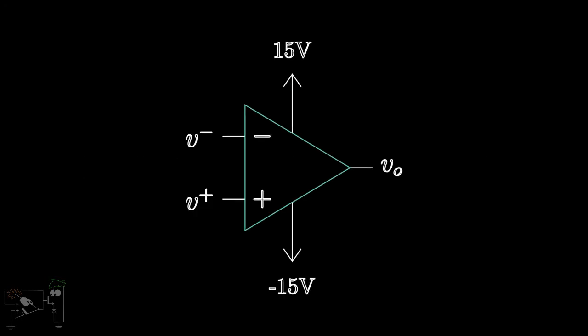If we take an open-loop op-amp and ground both the input terminals, ideally we should get zero voltage at the output.